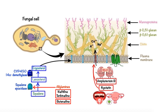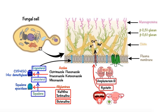The next enzyme, 14-alpha demethylase, is the target of a group of antifungals called azoles, which include drugs such as clotrimazole, fluconazole, itraconazole, ketoconazole, miconazole, and voriconazole.